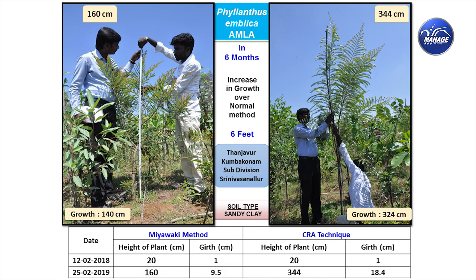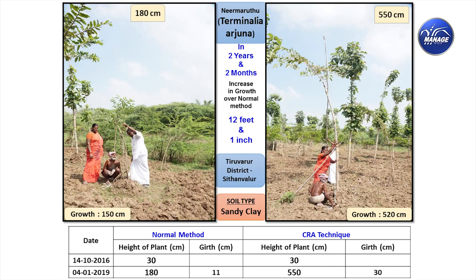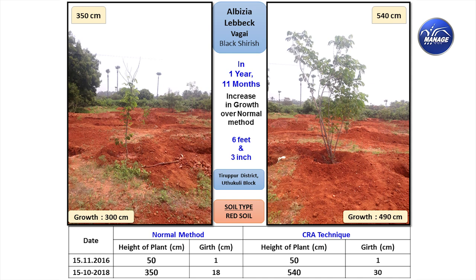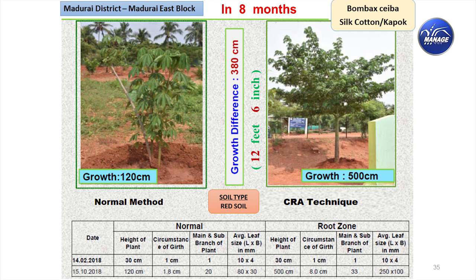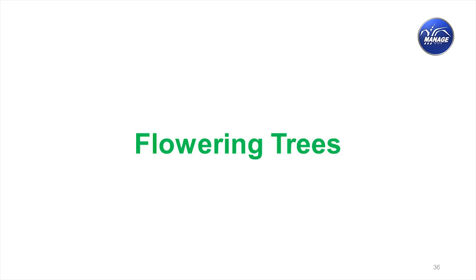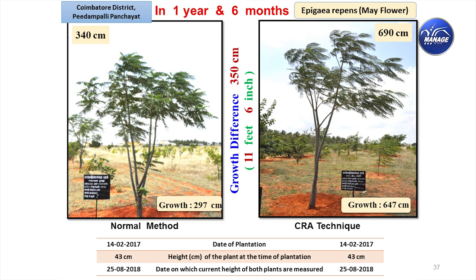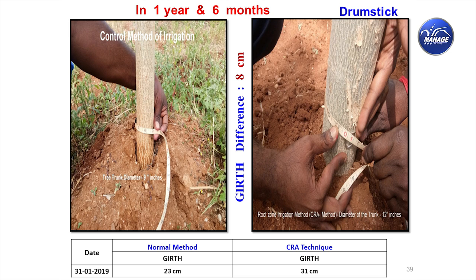For medicinal plants: Amla showed a difference in height of about 6 feet in 6 months. Terminalia Arjuna: 12 feet 1 inch in 2 years 2 months. Albizia lebbeck: 6 feet 3 inches in roughly 2 years. Bombax ceiba (silk cotton): 12 feet 6 inches. Mayflower: 11 feet 6 inches in 1.5 years. Mimosa: 4 feet 11 inches. The drumstick (Moringa/Murungai) biometric girth data was also shown — drumstick is being actively promoted by FAO to reduce anemia, especially among women in African countries, and yield increases were also found.